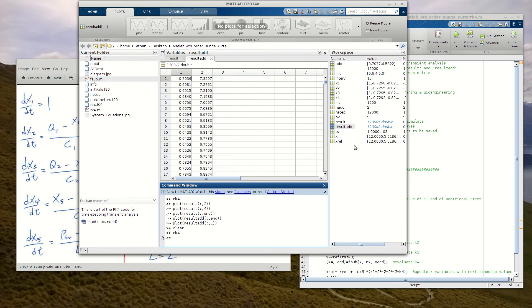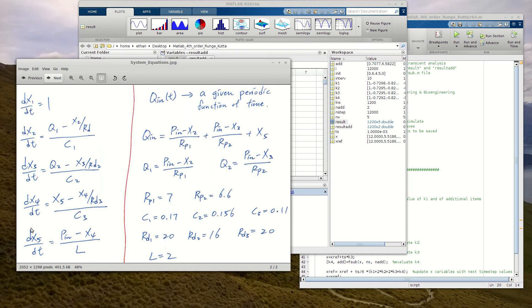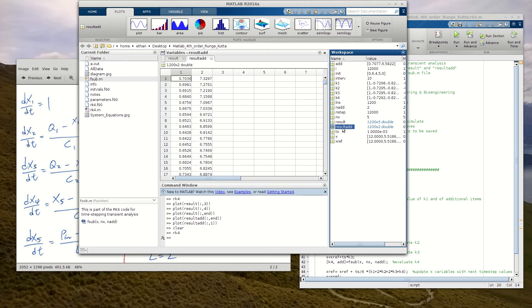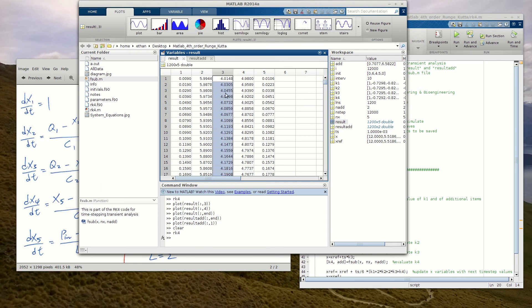And so your results are going to be saved in these two quantities, or these two variables. The results would include your x1 to x5, and then result_add will include the two additional variables that you want to keep track of. So let's just take a look to see what's in here.